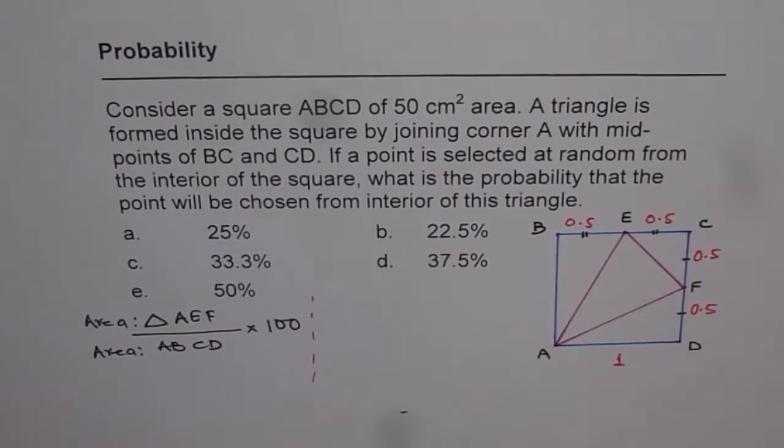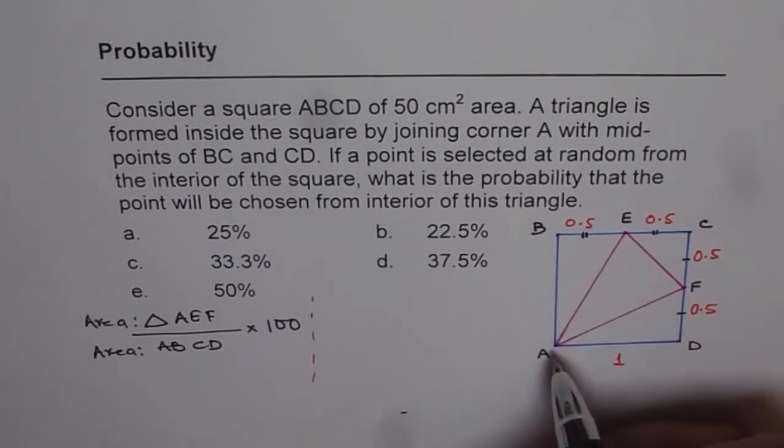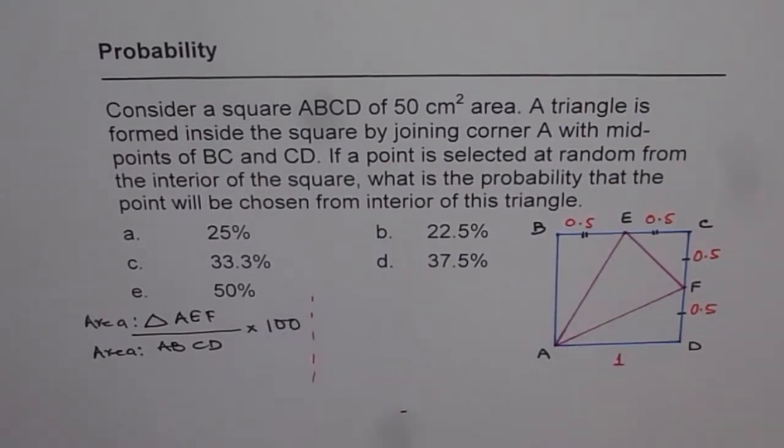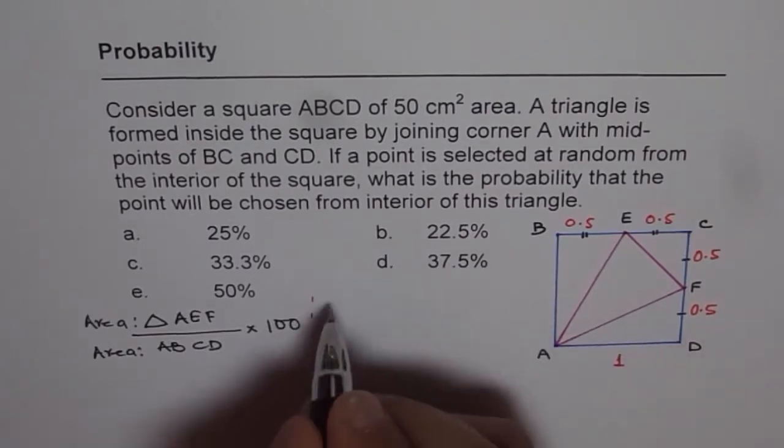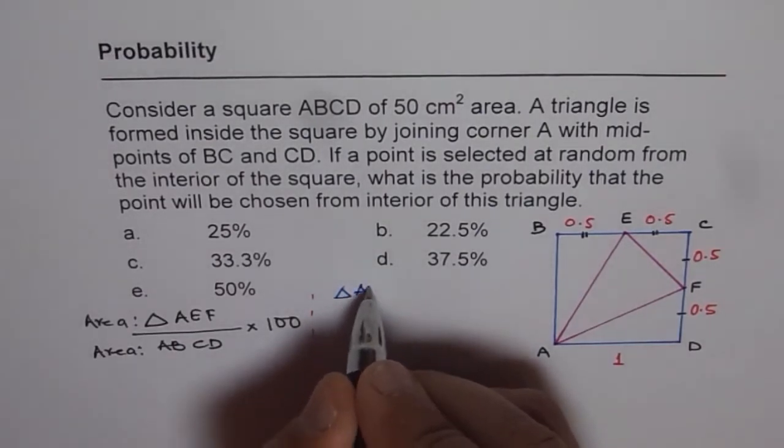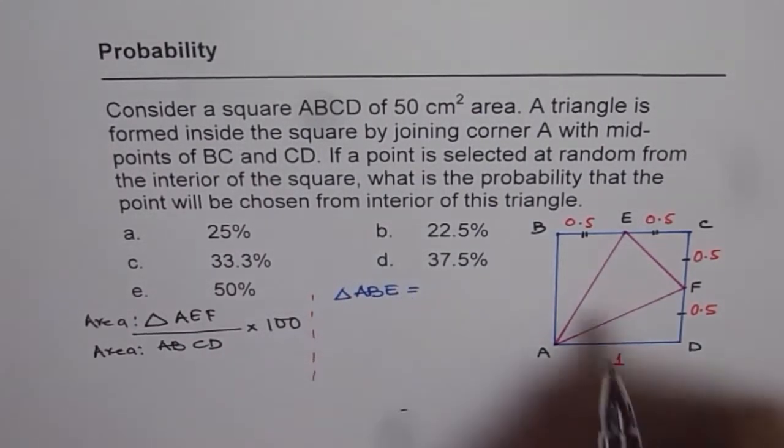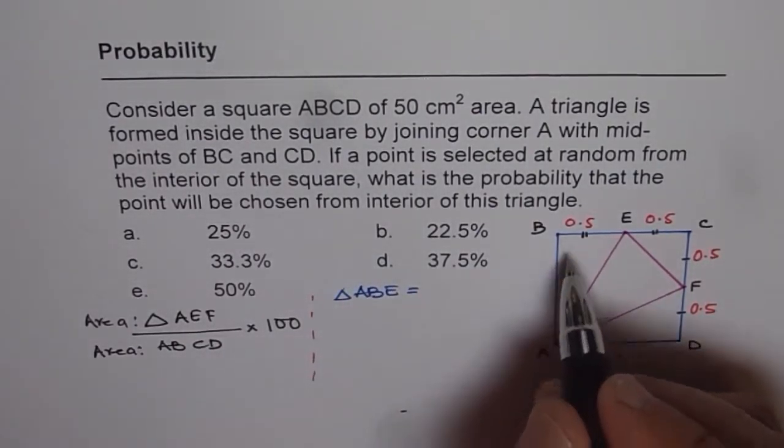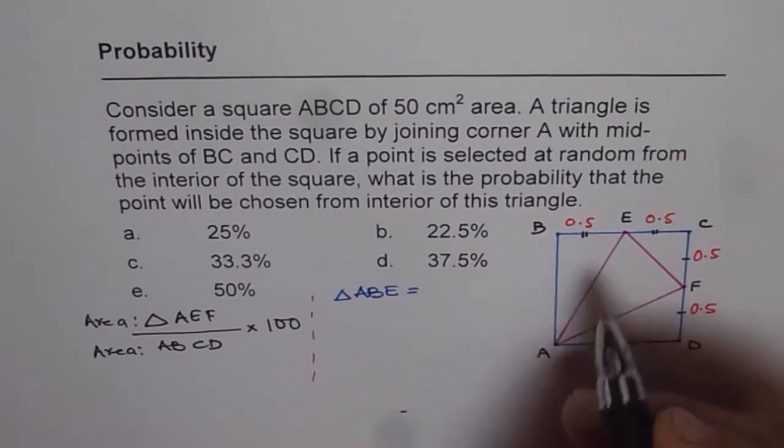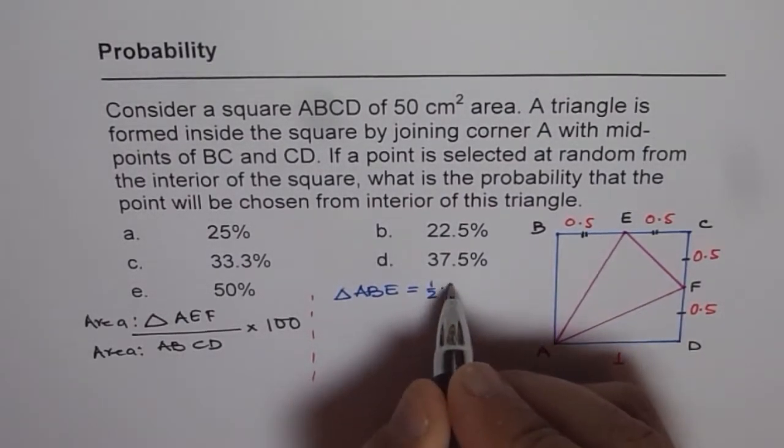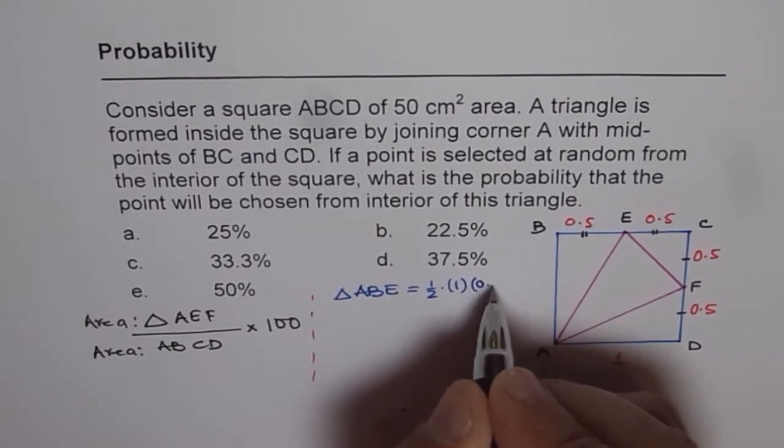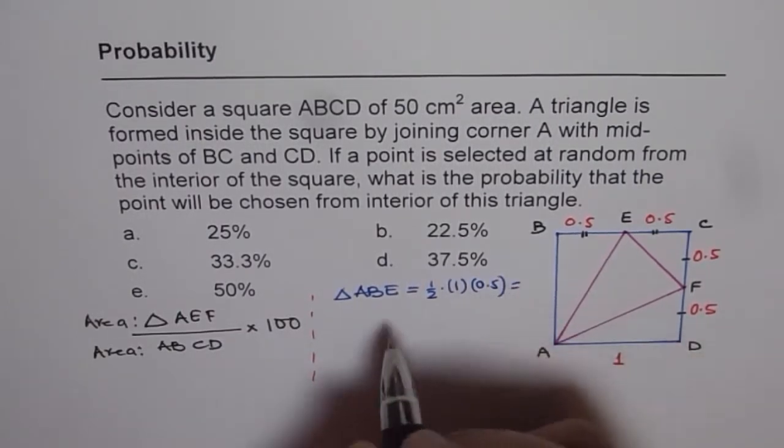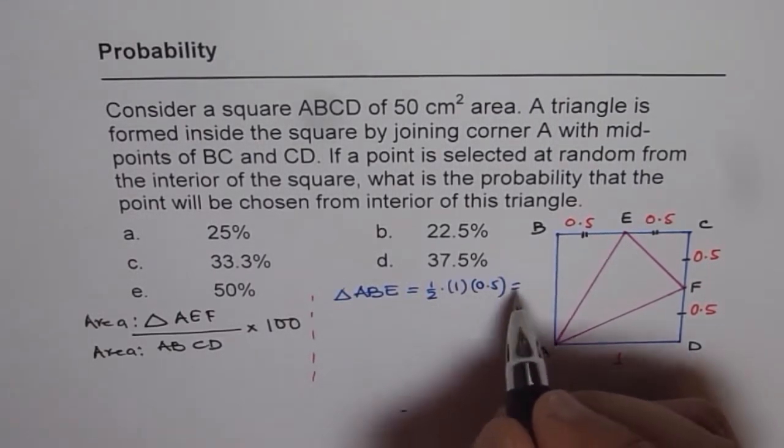Now, let us try to find what is the area of each triangle. Area of each triangle is, let's consider ABE. So let me use a different ink so that it doesn't mix up with the equation. We have area of triangle ABE as equal to 1 times 0.5 and half of that. So it is half of 1 times 0.5. So this is like 0.25.